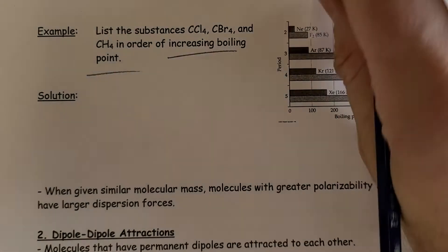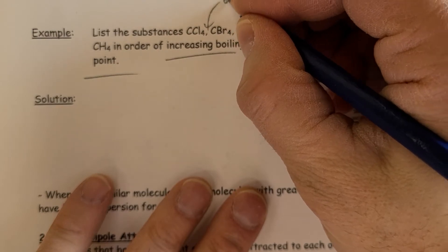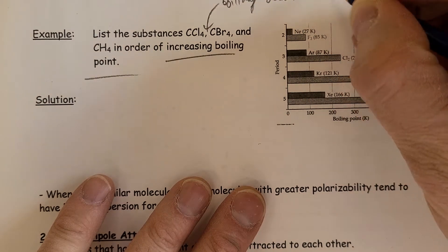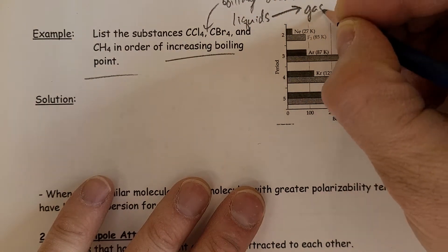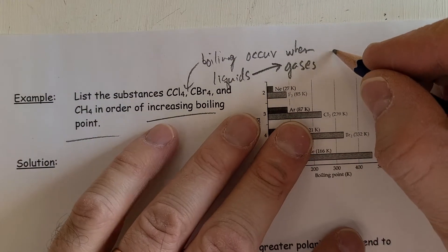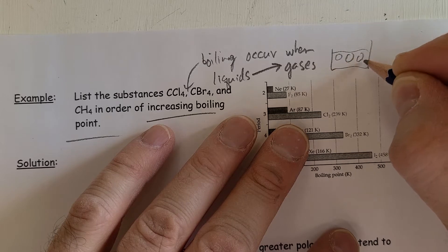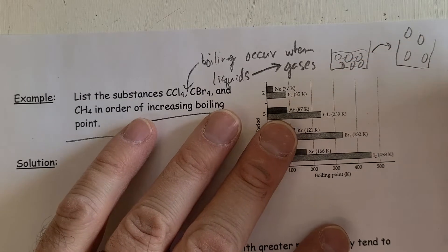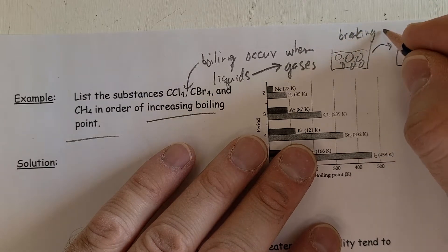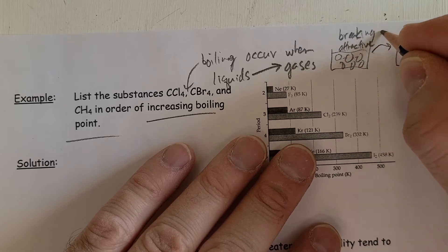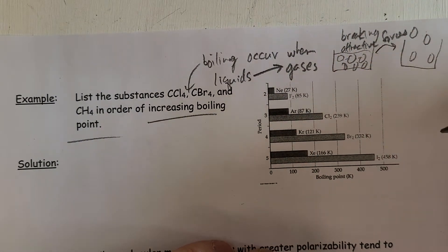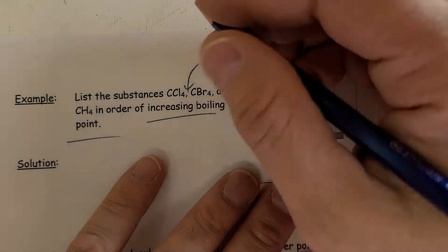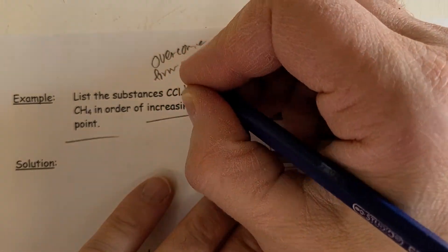Boiling points occur when liquids go to gases. What you're really doing when you're boiling something is you're taking something that has molecules relatively close together with liquids and making them spread out. So you're breaking those attractive forces. You can think of it as breaking attractive forces, because they're being held together. In this case, we're looking at dispersion forces. We're trying to pull them apart, we need to overcome the forces. If we have larger forces of attraction, the higher the boiling point will be.